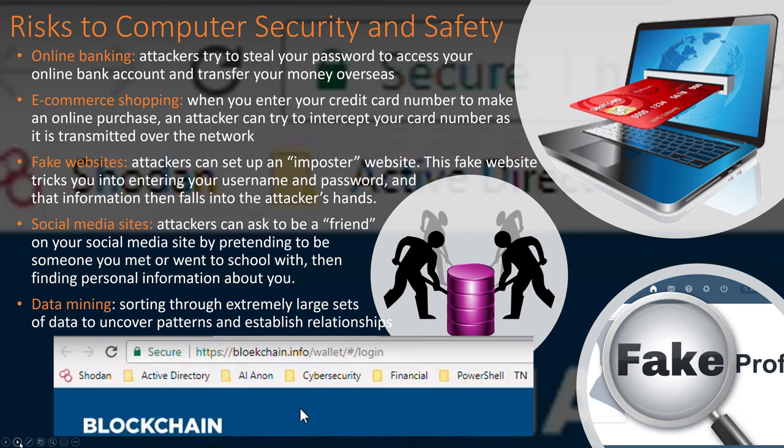For online banking, attackers try to steal your password and transfer your money overseas. Once transferred, a 'mule' — like a drug mule — uses a debit card to withdraw cash, making it nearly untraceable. The cash is then wired overseas or deposited into an unlinked account at a different bank so the money trail disappears. Wire transfers are another common method to move stolen funds out of reach.